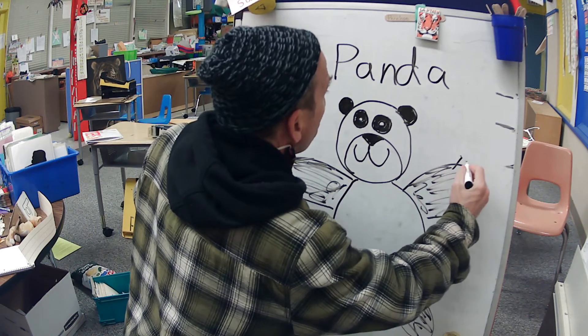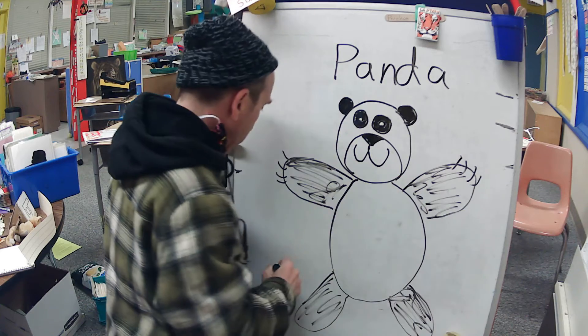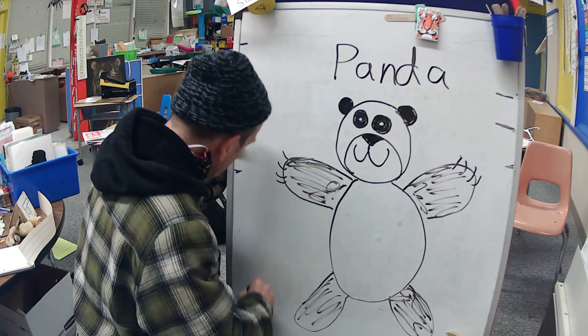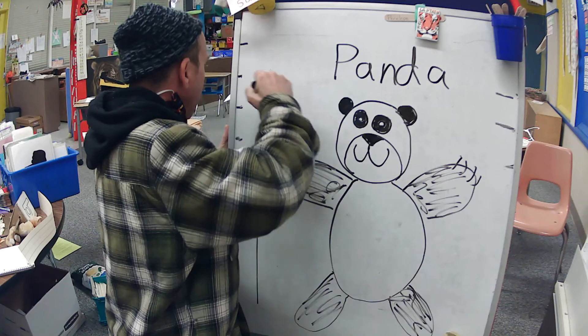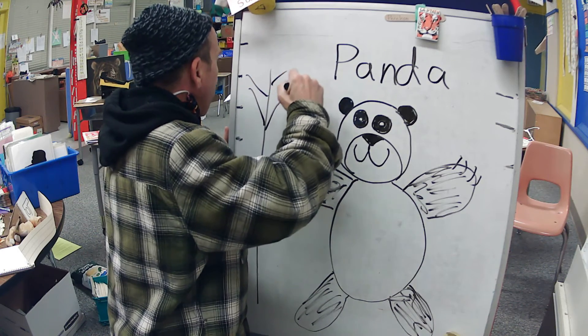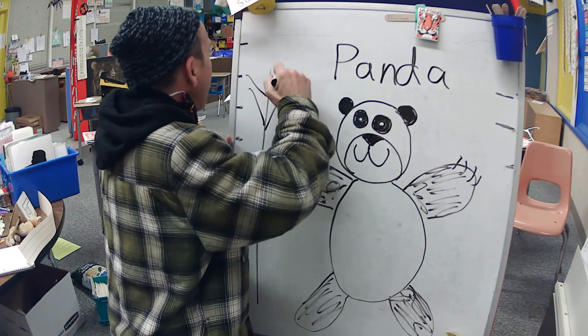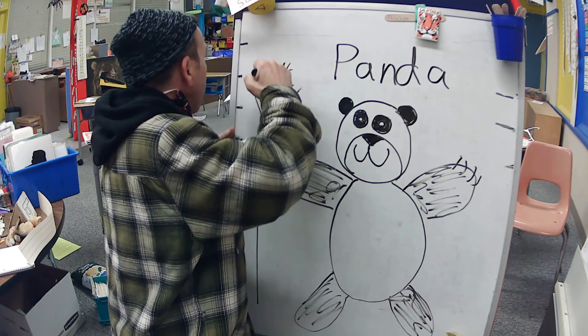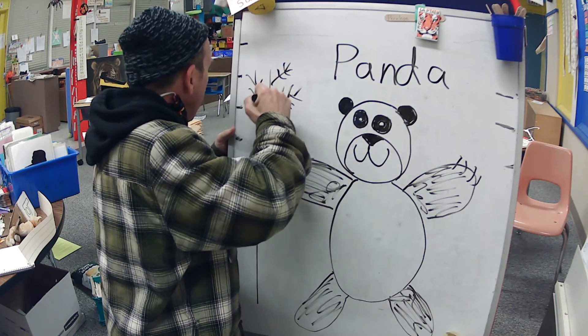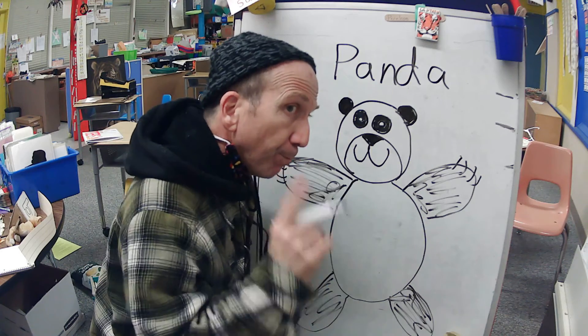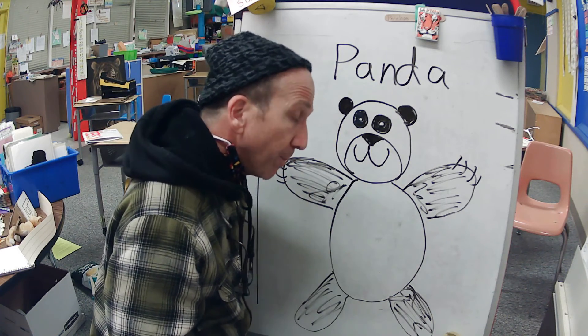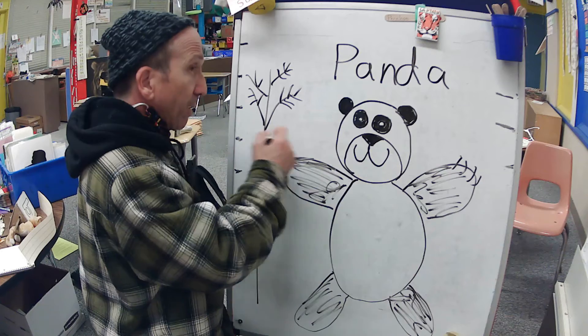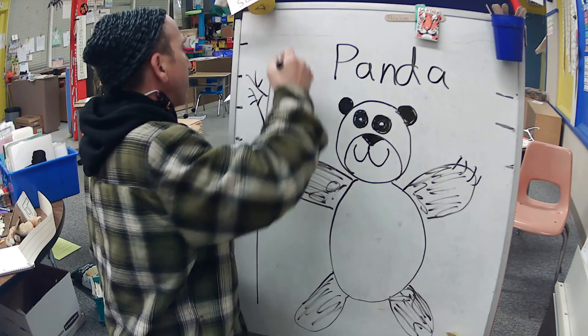But what makes pandas different is what they eat. They live in rainforests, and in this rainforest where it rains and snows in China where they're from, pandas eat only bamboo.